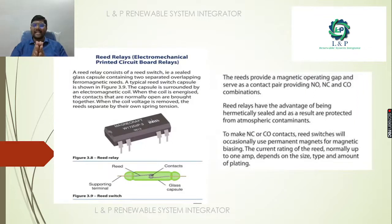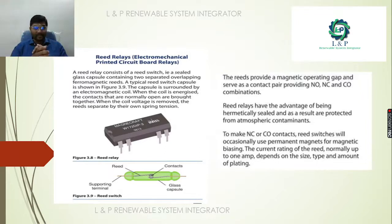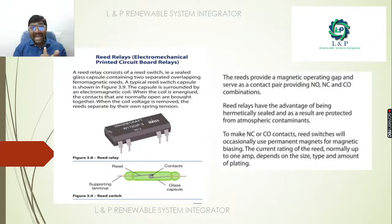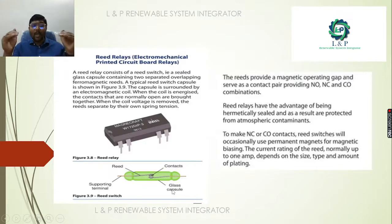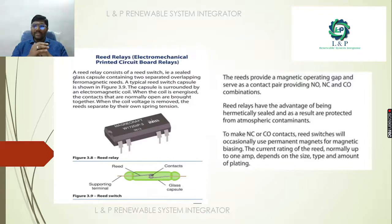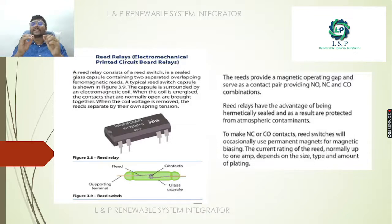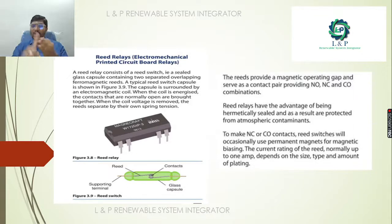Reed relays, also called electromechanical printed circuit board relays, consist of a reed switch sealed inside a glass capsule with two separated overlapping ferromagnetic reeds. These reed relays provide a magnetic operating gap and serve as a contact pair providing normally open (NO), normally closed (NC), and changeover (CO) contacts.